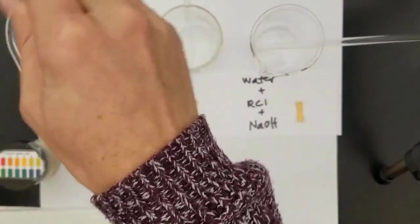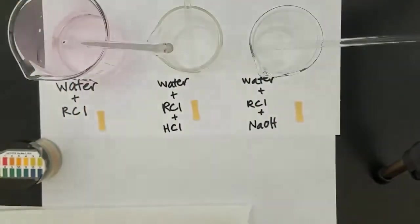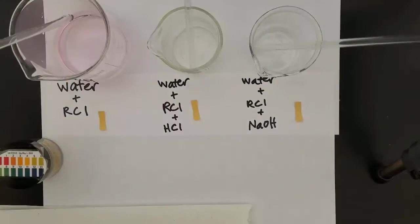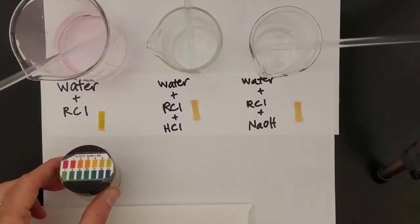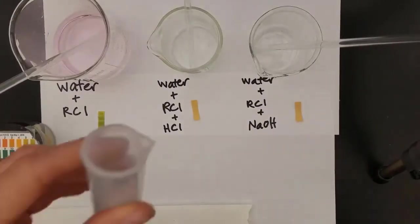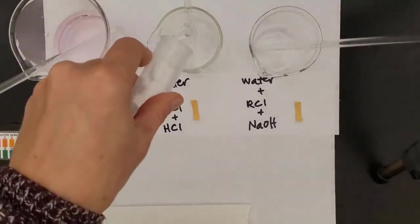The way you make red cabbage indicator is you just boil red cabbage, purple cabbage, and the purple water that you get off of it is an indicator, meaning it changes colors depending on the pH of the solution. So you can see the pH here is about 6 or so with that water red cabbage indicator mixture.